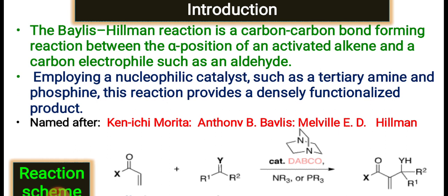The role of the reagent: this reaction is employed with the help of a catalyst, and the catalyst is a tertiary amine — a nucleophilic catalyst. Along with phosphine, you can also use tertiary amine with phosphine. That reaction provides a functionalized product. This reaction is named after Kenichi Morita, Baylis, and Hillman, and that's why it is also called the Morita-Baylis-Hillman reaction.